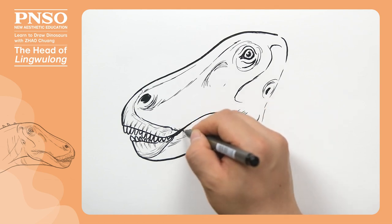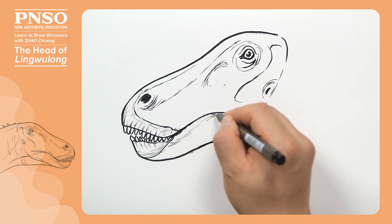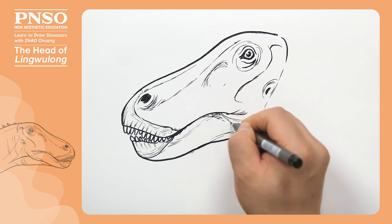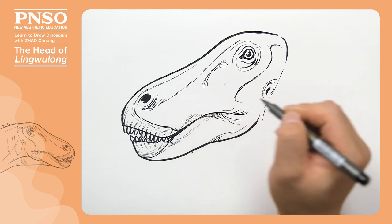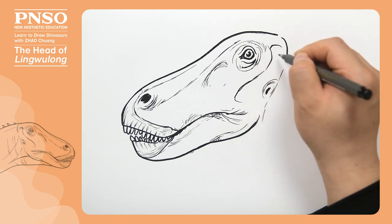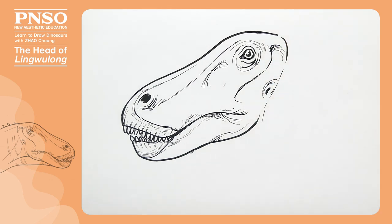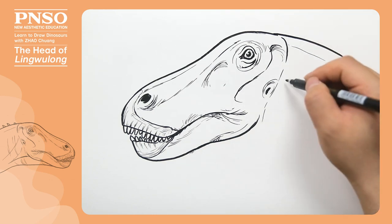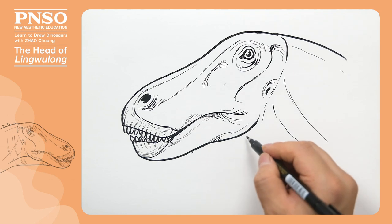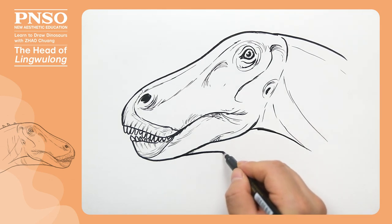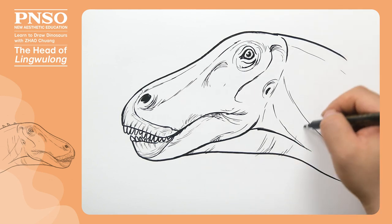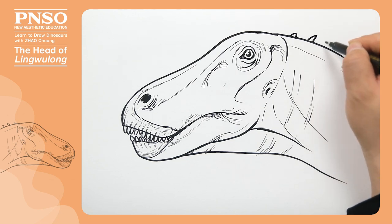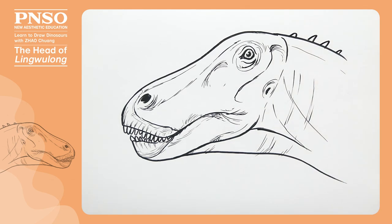We can draw some thin lines around its lips to give it a soft texture. Lastly, let's slightly show its neck to make the picture relatively complete. Below, let's draw its throat. Good — like this, we've finished drawing the head of Lingwilong.